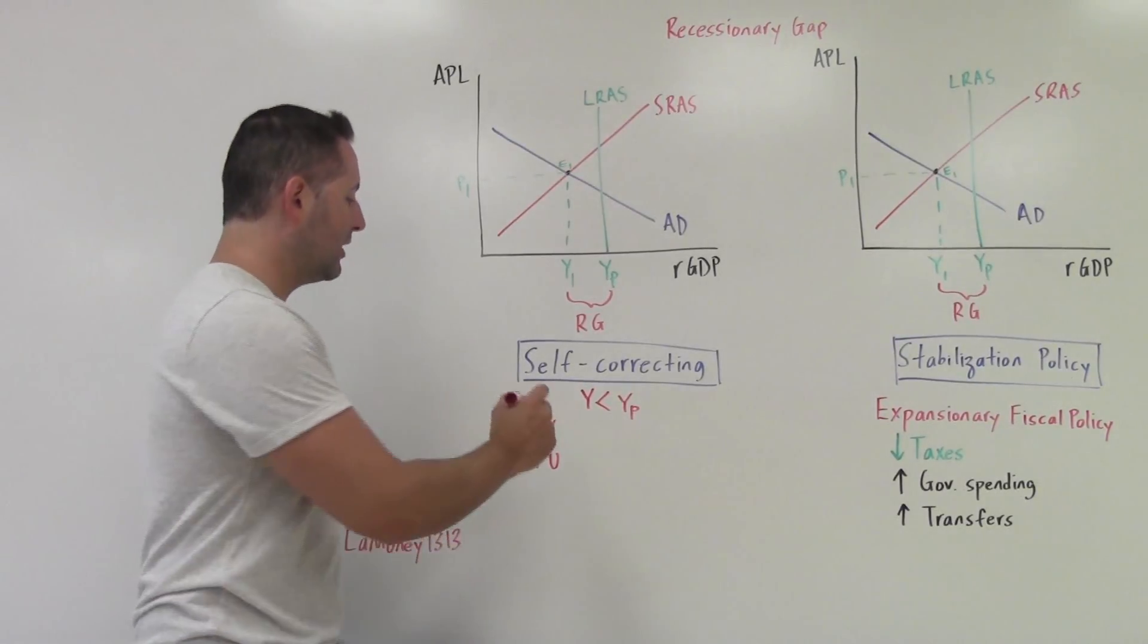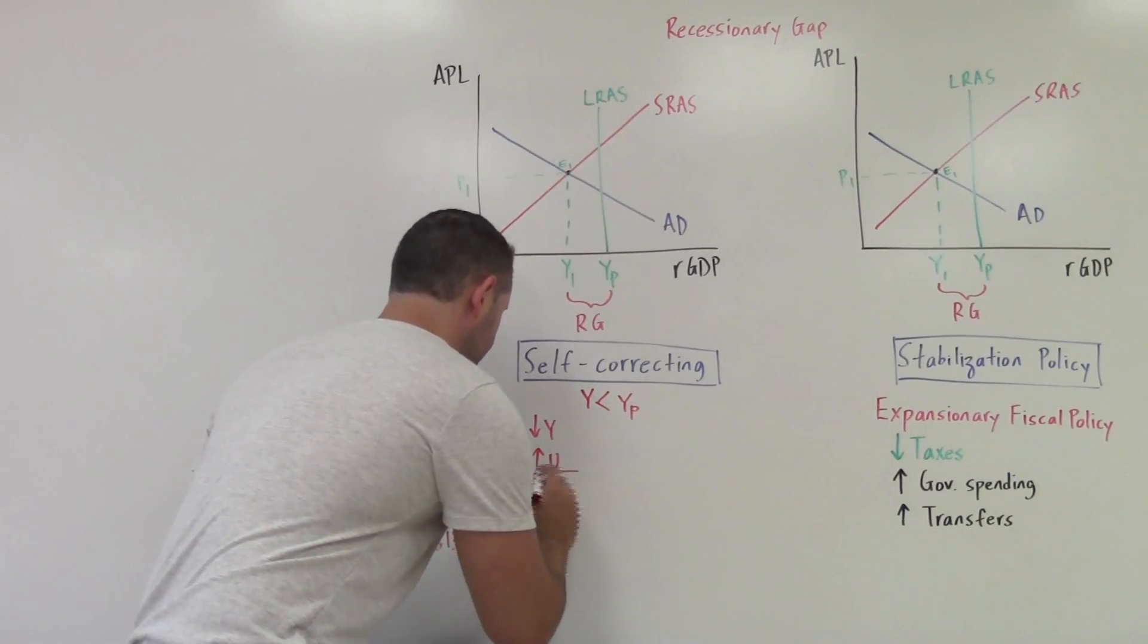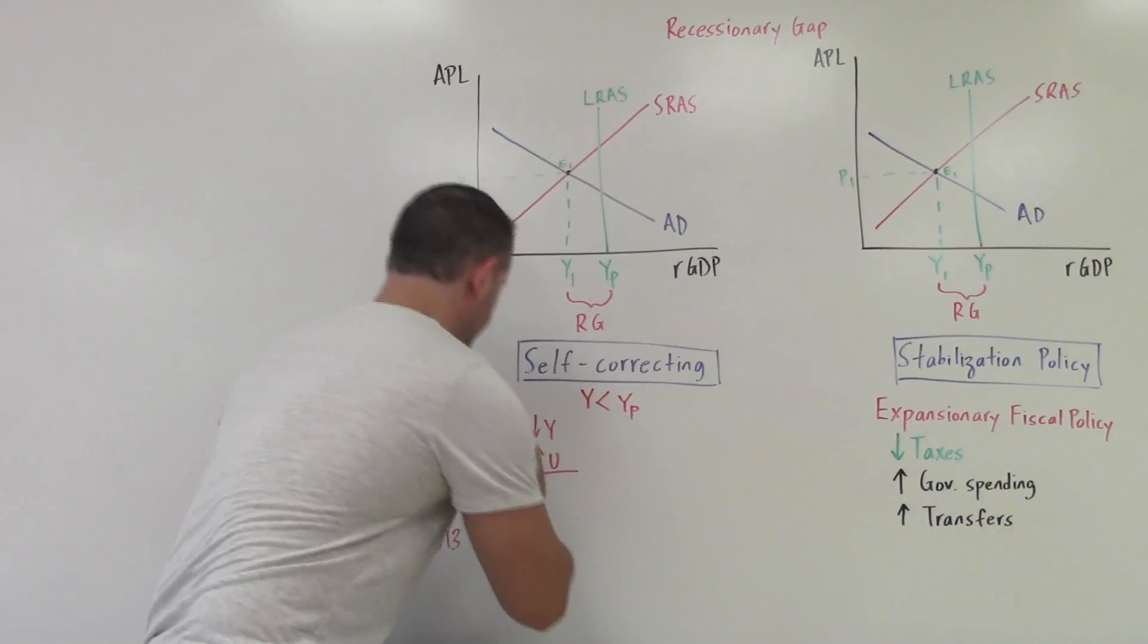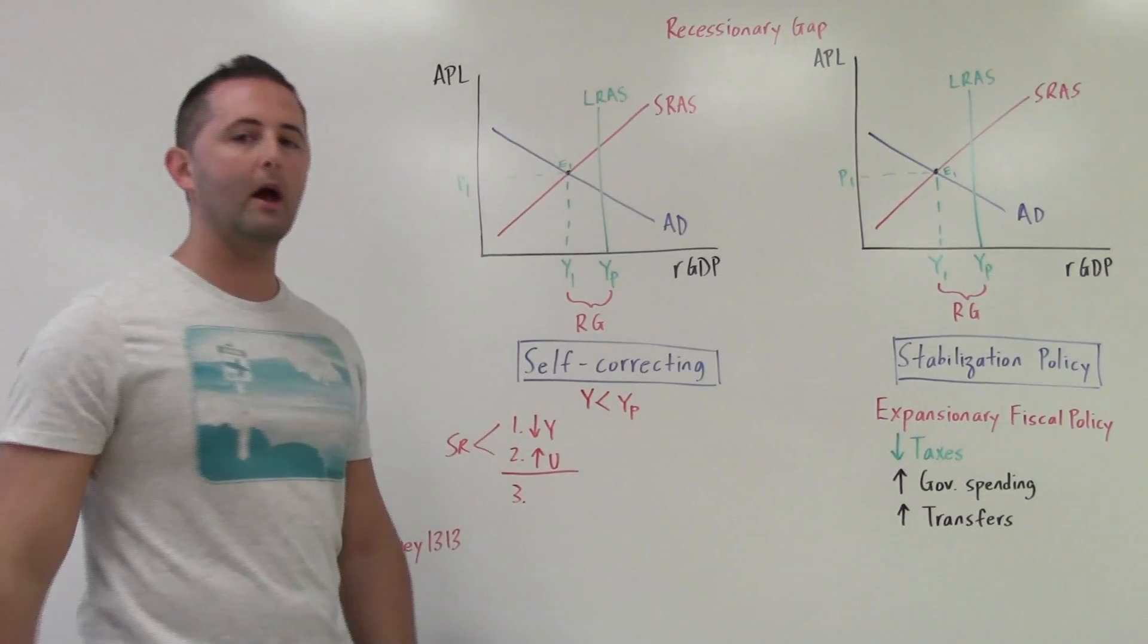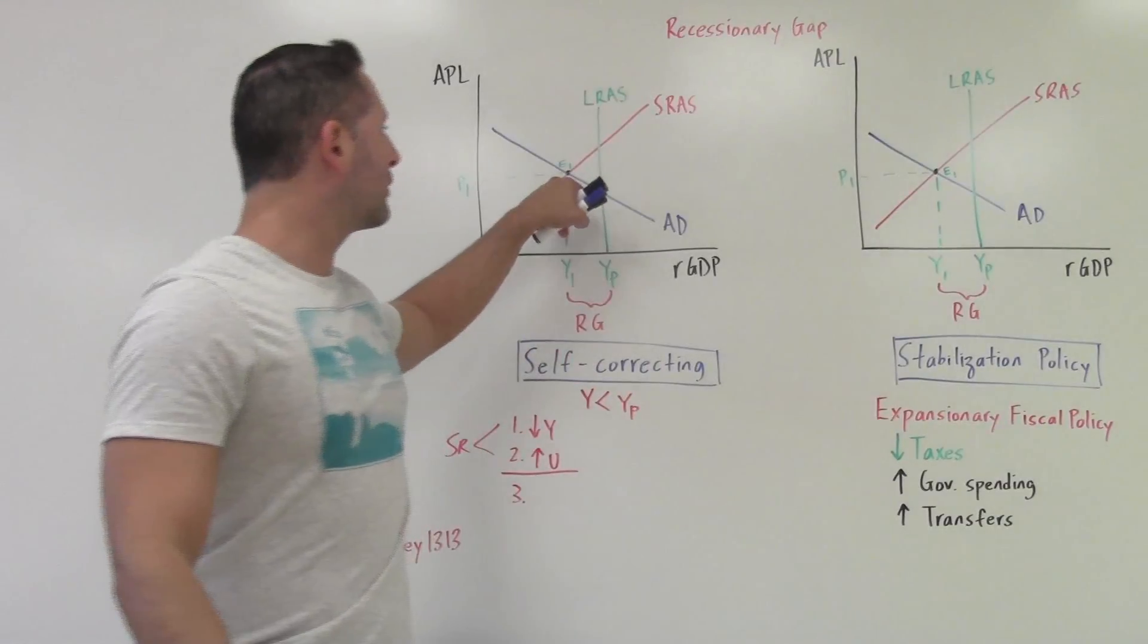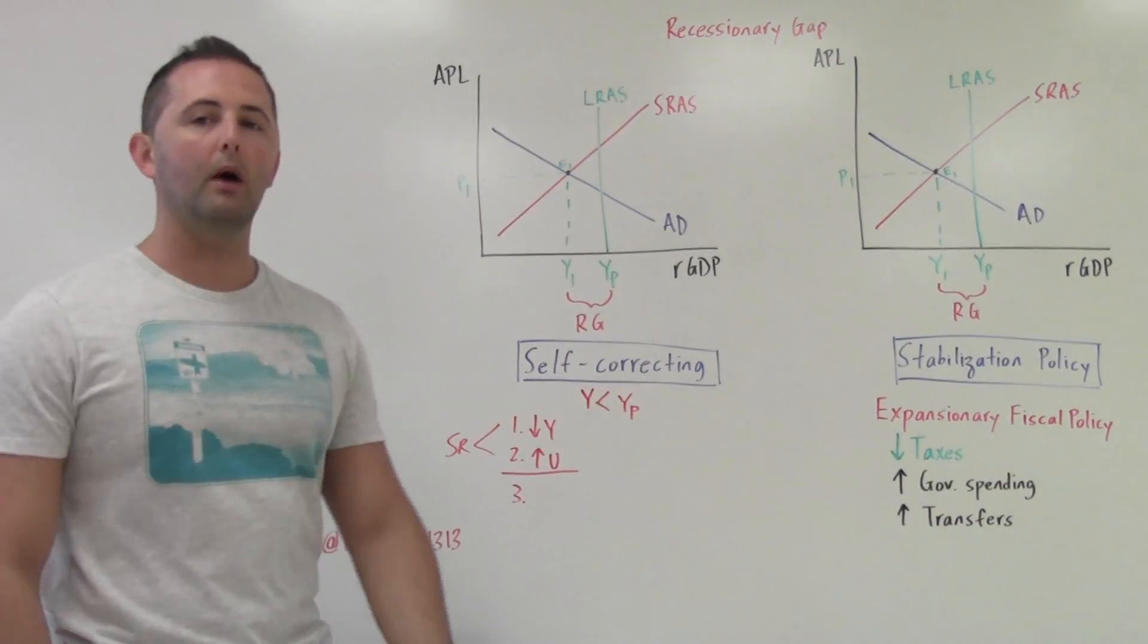We discussed this in another video. This occurs in the short run. So these two things that we've done so far, falling output and unemployment rising, that's where we are at E1. So that is E1, falling output, rising unemployment.